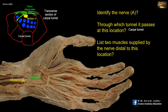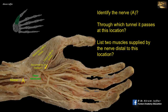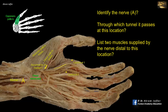The recurrent branch supplies the three thenar muscles: abductor pollicis brevis, flexor pollicis brevis, and opponens pollicis, which lies in a deeper plane. The nerve also supplies the first two lumbrical muscles — the radial lumbrical muscles.